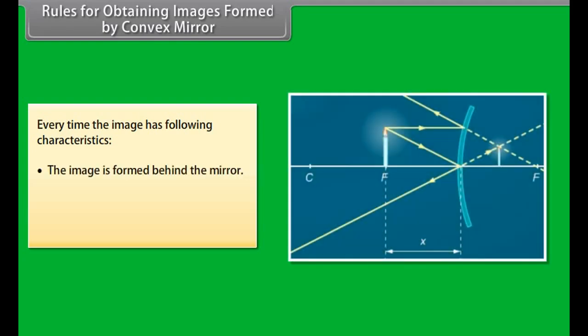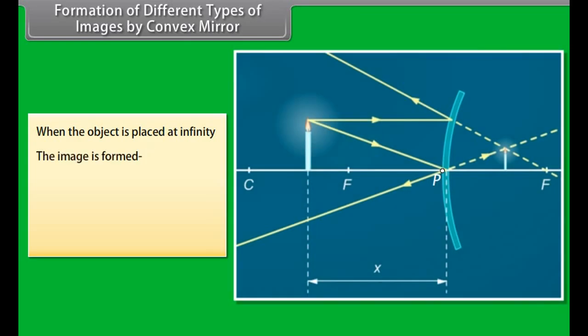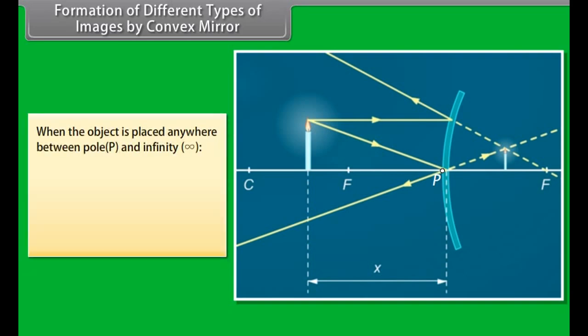For a convex mirror, the image always has the following characteristics: the image is formed behind the mirror, it is virtual and erect, and smaller than the object. When the object is at infinity, the image is formed behind the mirror — virtual, erect, and smaller. When the object is placed anywhere between pole P and infinity, the image is formed behind the mirror — virtual, erect, and smaller than the object.